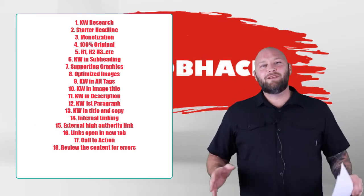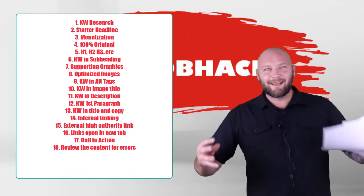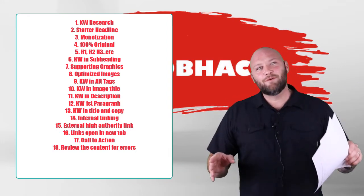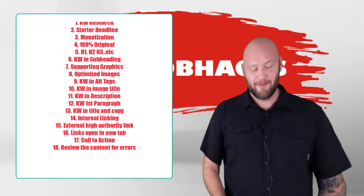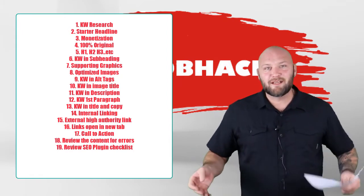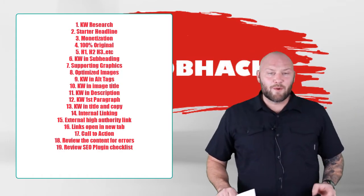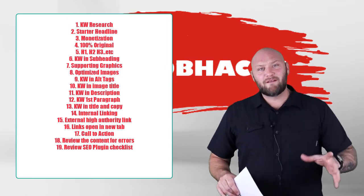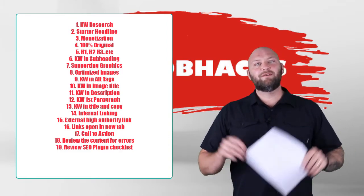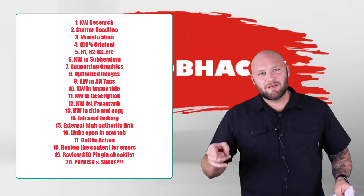Number eighteen: before you hit publish, do a final edit. Check for spelling errors, read through the content again, fill in any gaps, and make sure you have correct punctuation. This is important for both Google and the user experience. Number nineteen: go through the Rank Math plugin — or Yoast, which is another SEO plugin — and check that all the key SEO items are properly followed before you hit the publish button.